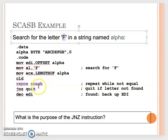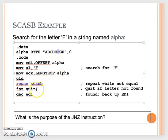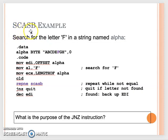However, if we do find it, we want to have EDI point to that location. But one thing is: when EDI really finds the 'F', because SCASB would increment EDI directly, when we finish, the EDI will actually point to 'G' — not the location we're looking for. So we need to decrement EDI. That's SCASB.